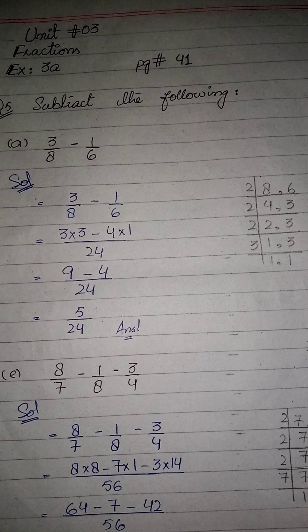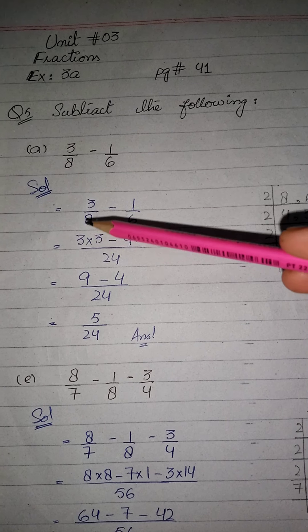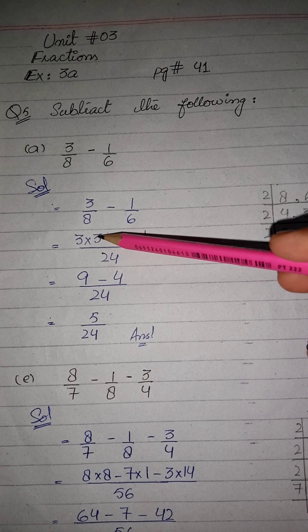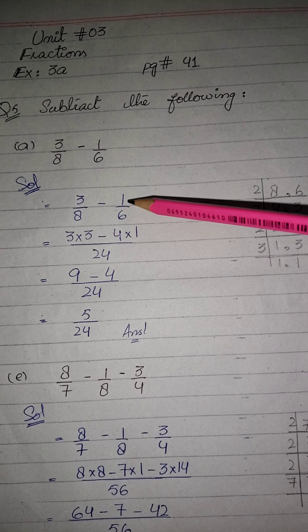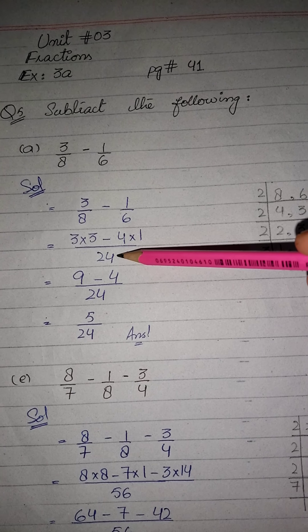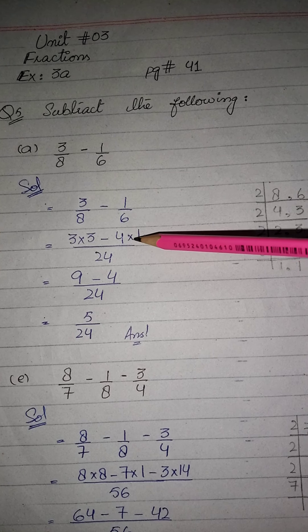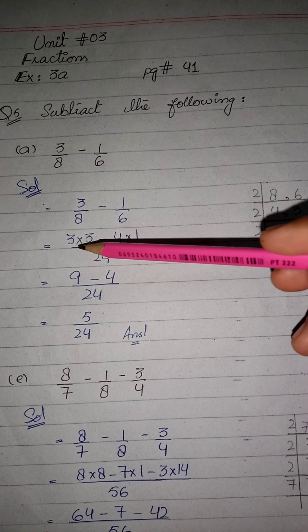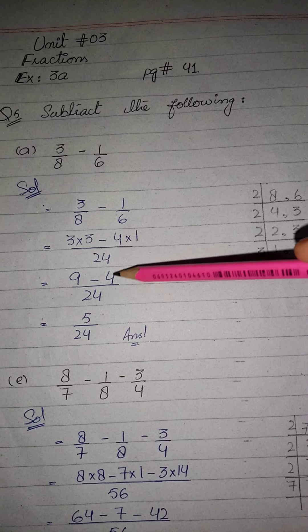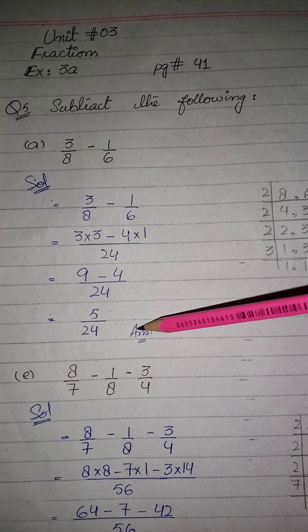اب ہم دیکھیں گے 8 کو ہم نے کتنی times پڑھا کہ ہمارے پاس آیا 24۔ 8، 3 سے 24 ہوتا ہے، تو اس 3 کو multiply کروا دیں گے 3 سے۔ پھر 6 کو کتنی times پڑھا کہ 24 آیا — 6، 4 سے 24 ہوتا ہے، تو اس 1 کو 4 سے multiply کروا دیں گے۔ اب 3 threes are 9، 1 four is 4، تو 9 minus 4 = 5 upon 24 — یہ ہمارا answer ہو گیا۔